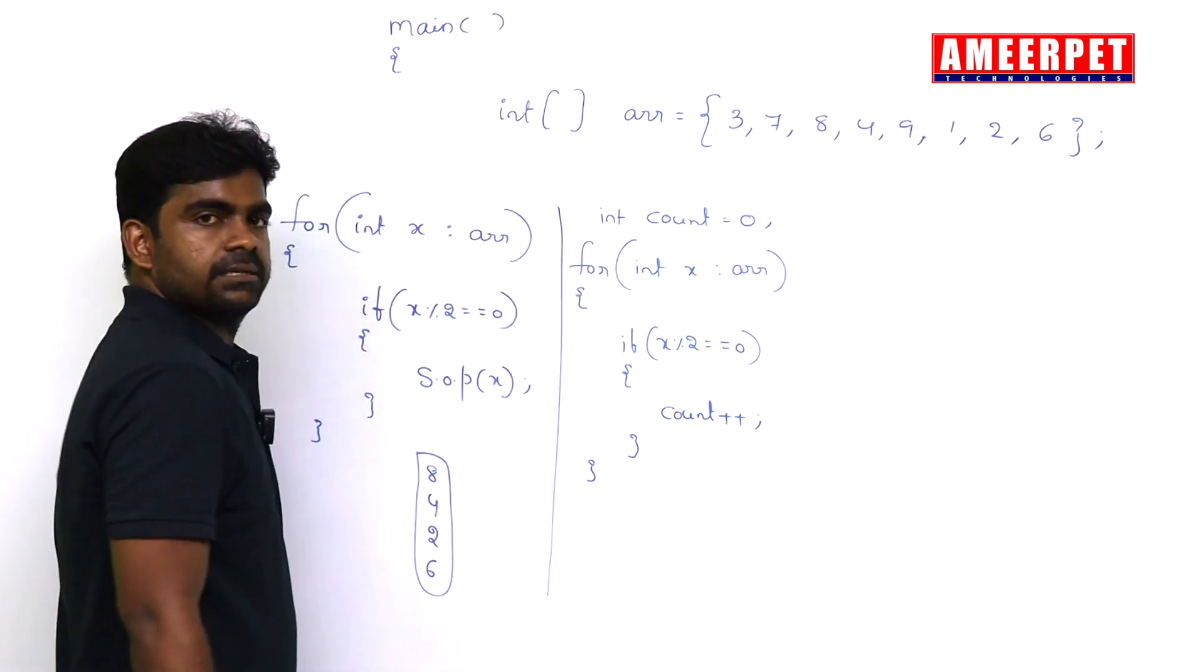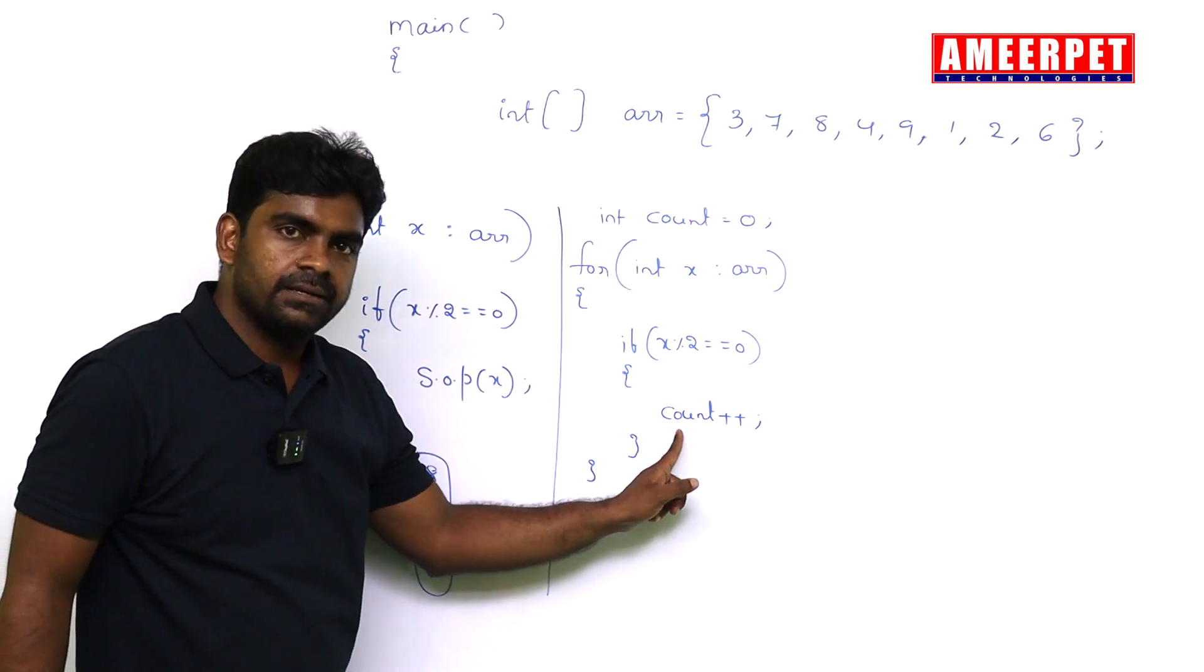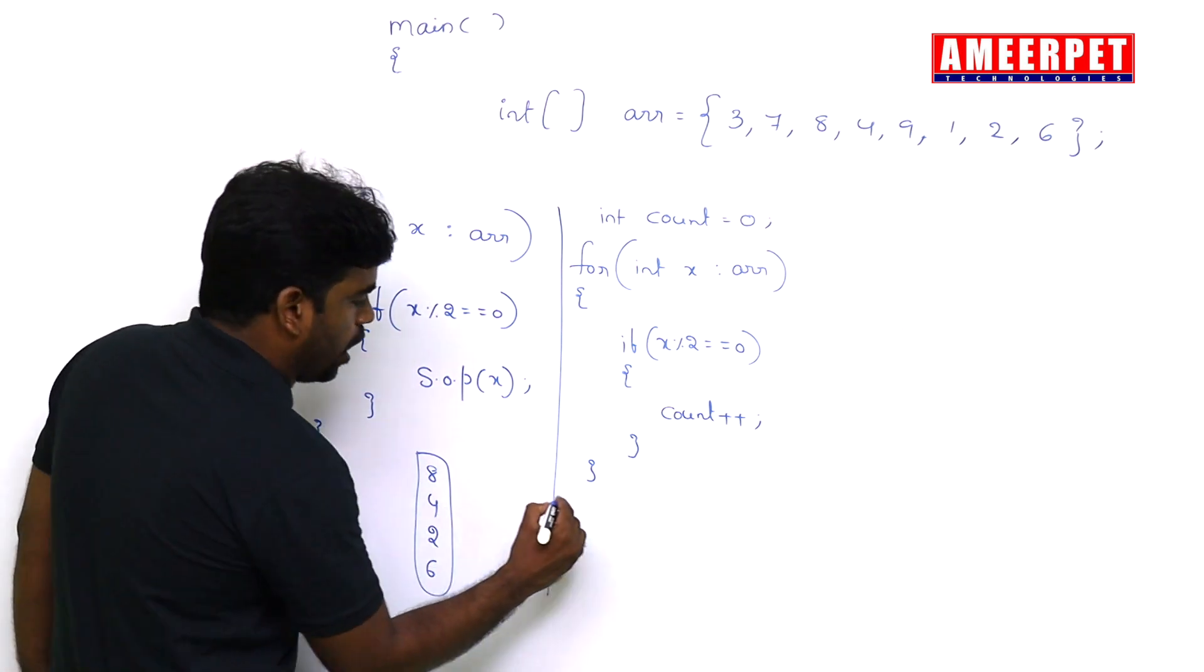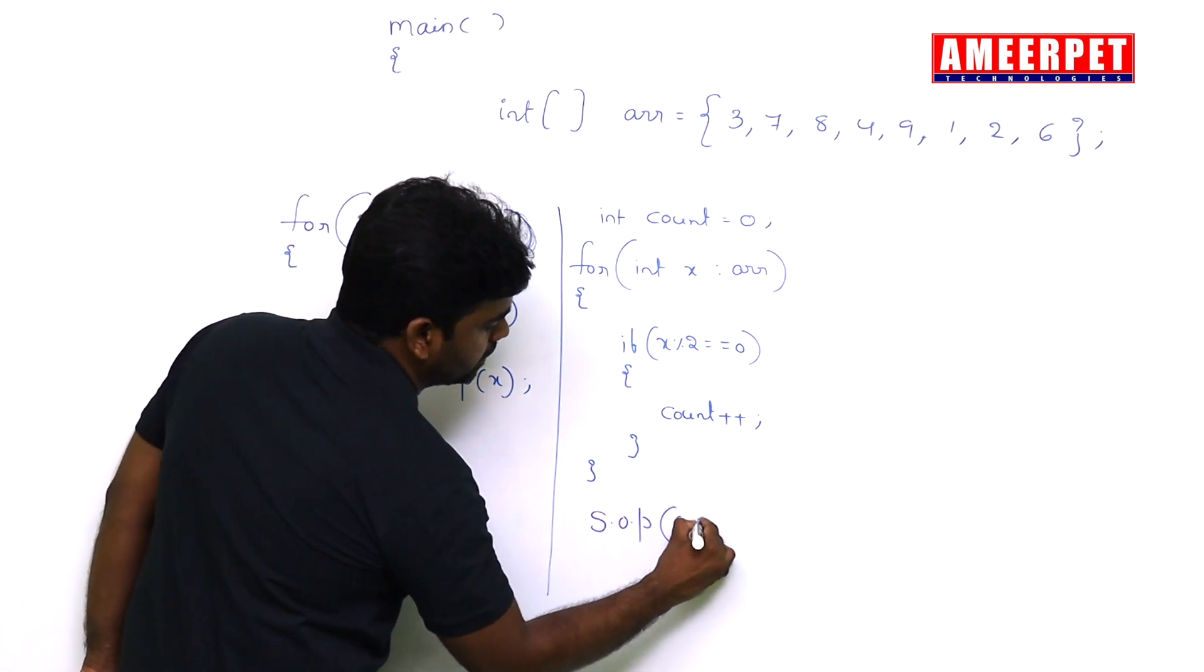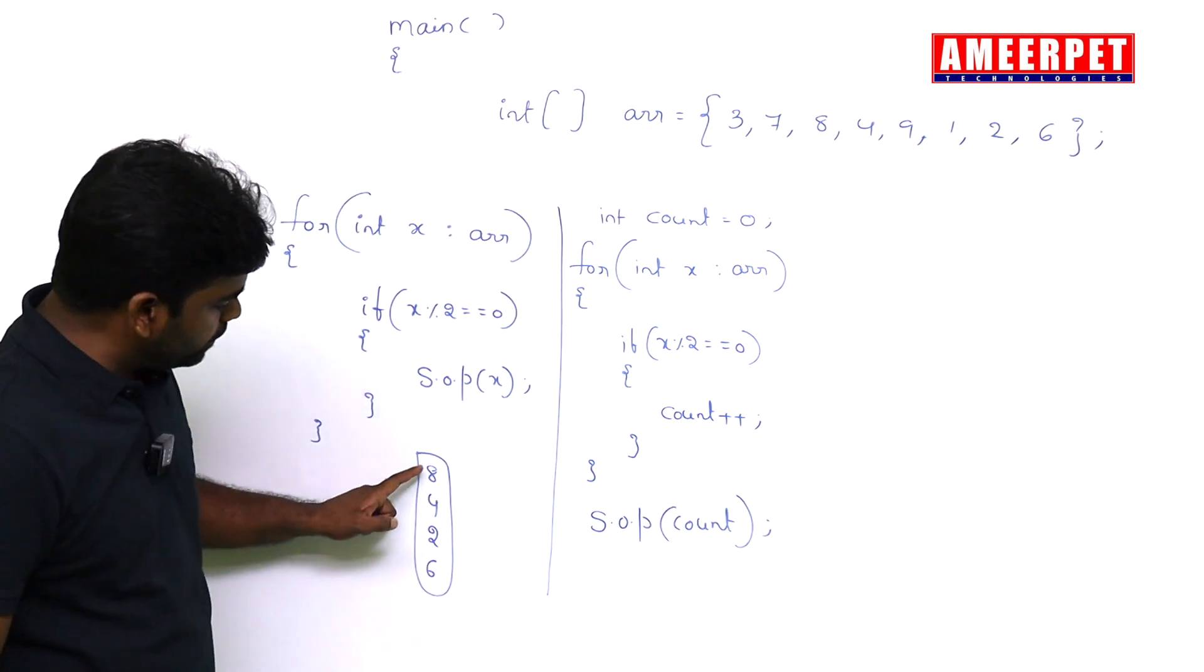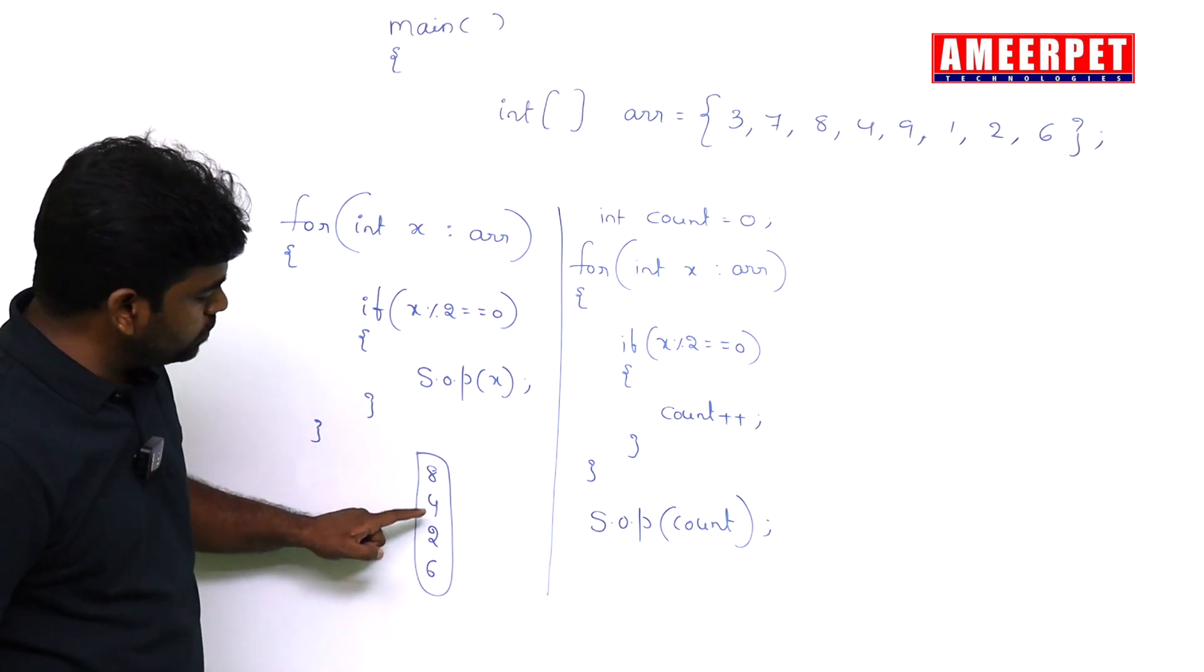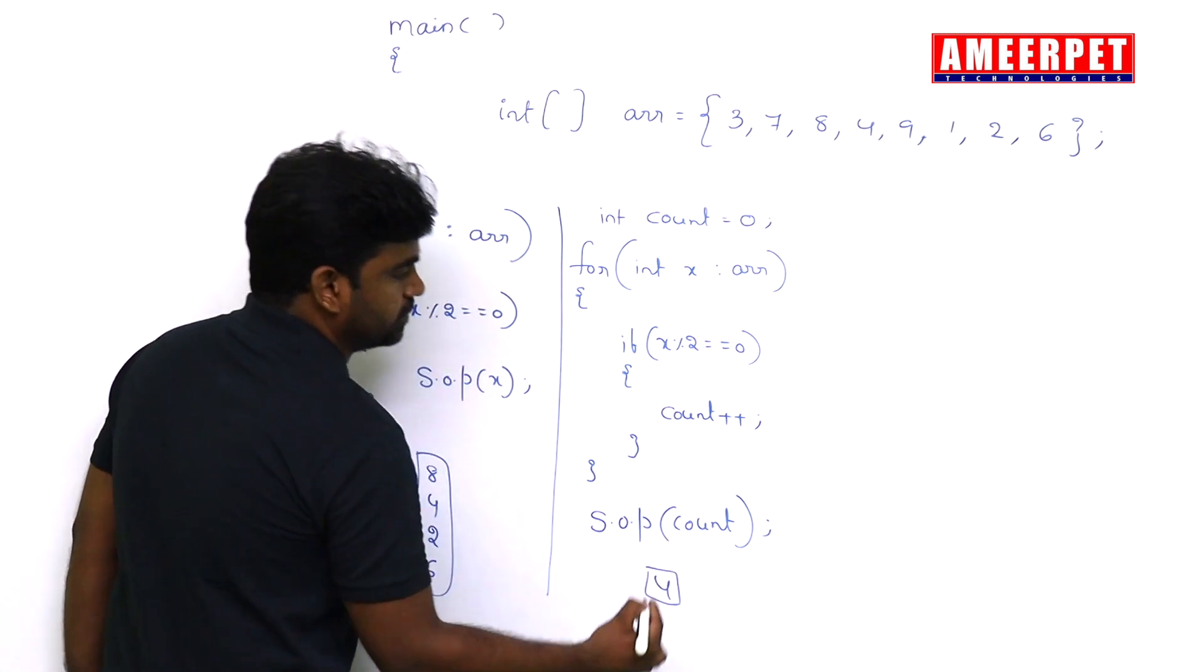Count plus plus will count. Please don't print inside, because count means only one count you need to display, so outside: system.out.println that count you need to display. So total how many? One, two, three, four. So count value one, two, three, four. So output is four will print.